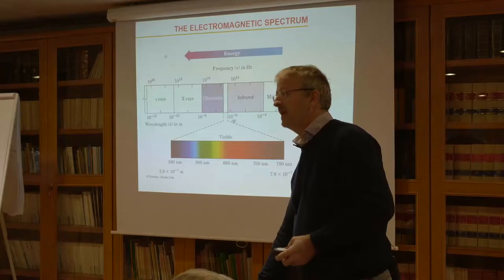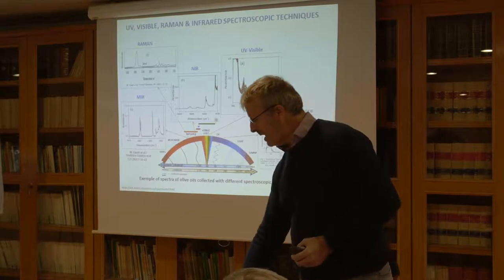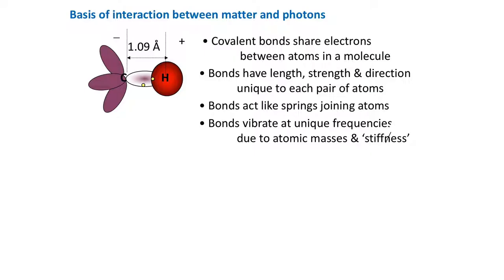The infrared region is used in several spectroscopy techniques, but there are also other techniques using electromagnetic radiation: fluorescence in the ultraviolet, UV-visible spectroscopy, near-infrared and mid-infrared — two very different parts of the infrared — and also Raman techniques. In this presentation we will focus on mid-infrared.